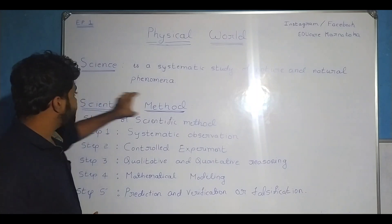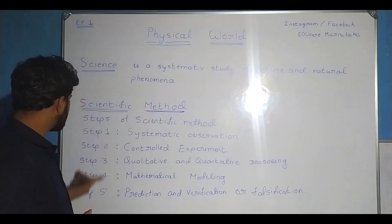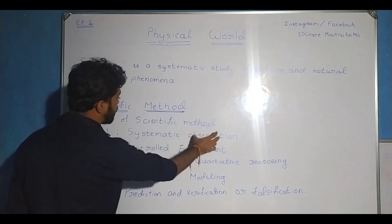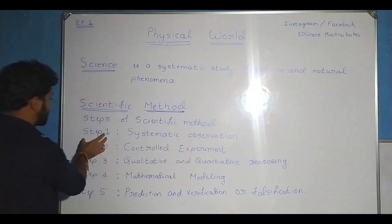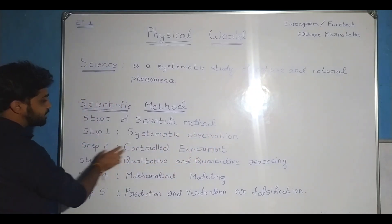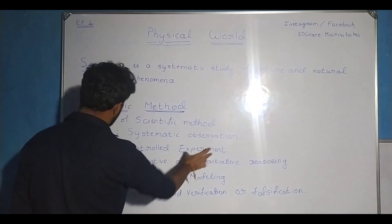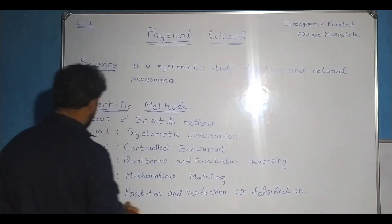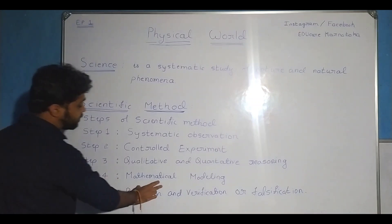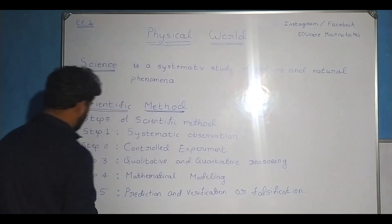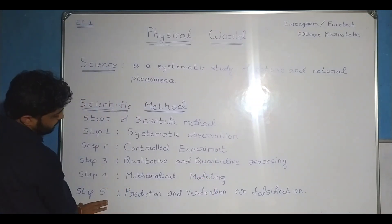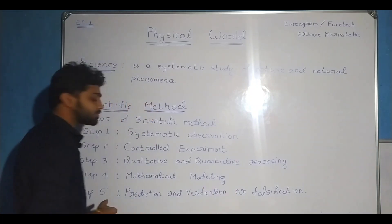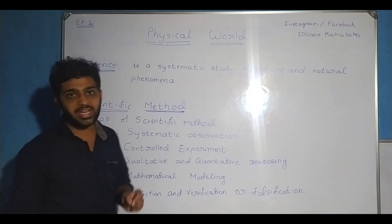The scientific method has five steps. The first step is systematic observation. The second step is controlled experiment. The third step is qualitative and quantitative reasoning. The fourth step is mathematical modeling. The fifth step is prediction and verification or falsification.